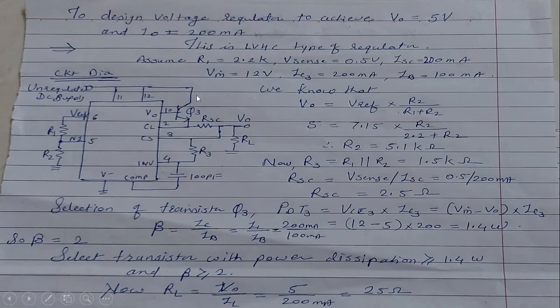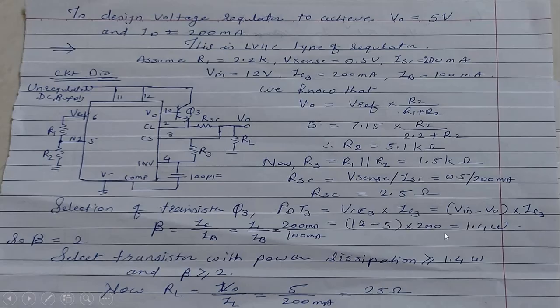Now we determine the selection criteria for the transistor. First, we find the power dissipation: P = VCE × IC = (Vin − Vout) × IC3. With Vin = 12 V and substituting all values, the power dissipation in the transistor is approximately 1.4 watts.